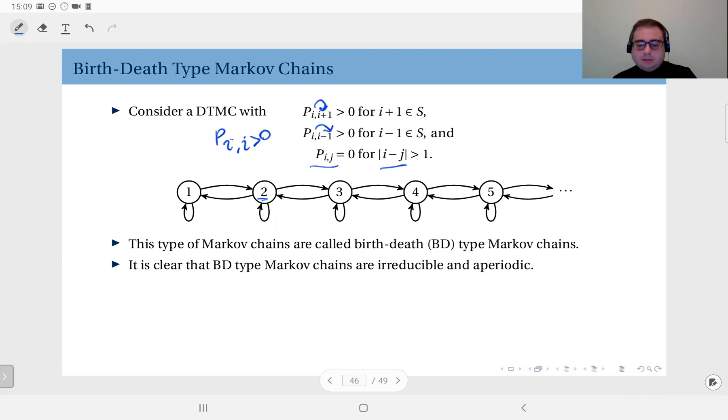This is why we call it birth-death. It's like a population where every transition corresponds to either a birth, which gives you a plus 1 transition, or a death, which corresponds to a minus 1 transition. You cannot have multiple births and multiple deaths at the same instant. You cannot go from 4 to 6 or from 4 to 1, only to either 3 or 5 or itself.